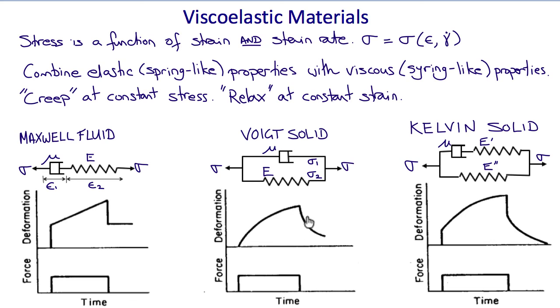In the Voigt solid model, when the force is applied, initially nothing happens because it takes a finite amount of time for the syringe to start to stretch out. And as it does, it stretches the spring, which therefore slows down the syringe. As the force is removed, then the spring gradually brings the material back to its original state. So this is more of a solid-like behavior.